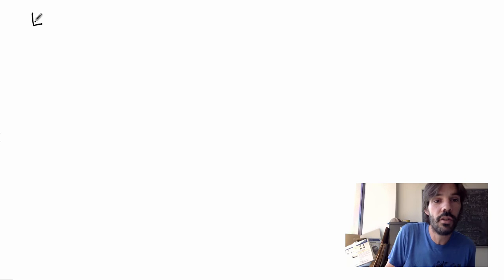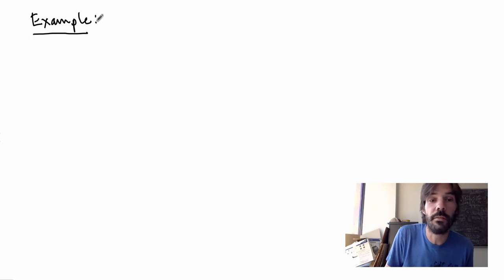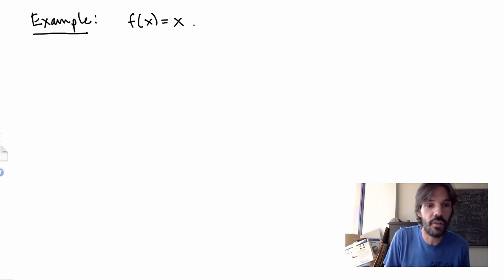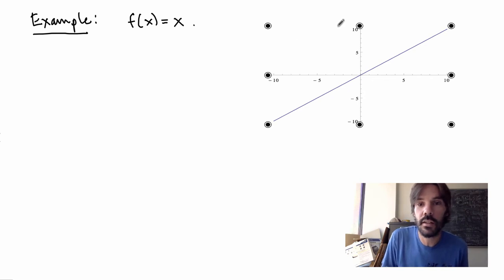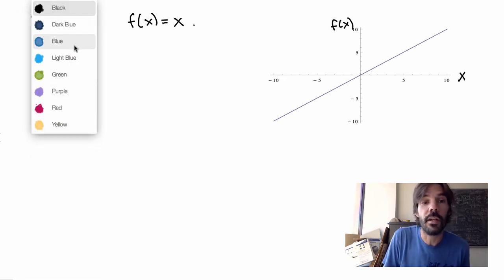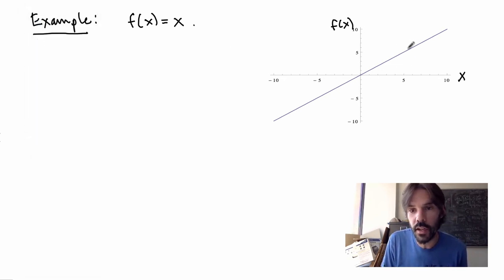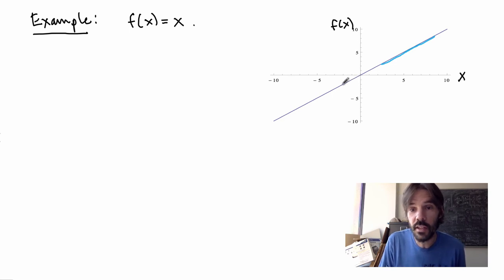Let's do another example in some detail, both geometrically and from the definition. Let's choose the simple function f(x) equal to x. I can graph this function and get a straight line. If I choose an arbitrary point on the curve, the tangent line turns out to be exactly the same as the line itself, and that's true for any point on the graph.